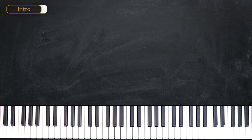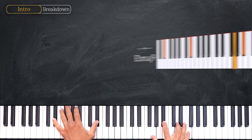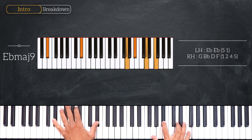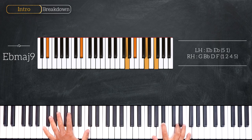We start on this E flat major 9, playing octave E flat on the left hand and G, B flat, D, F on the right. Then we move the left hand, playing an octave C.